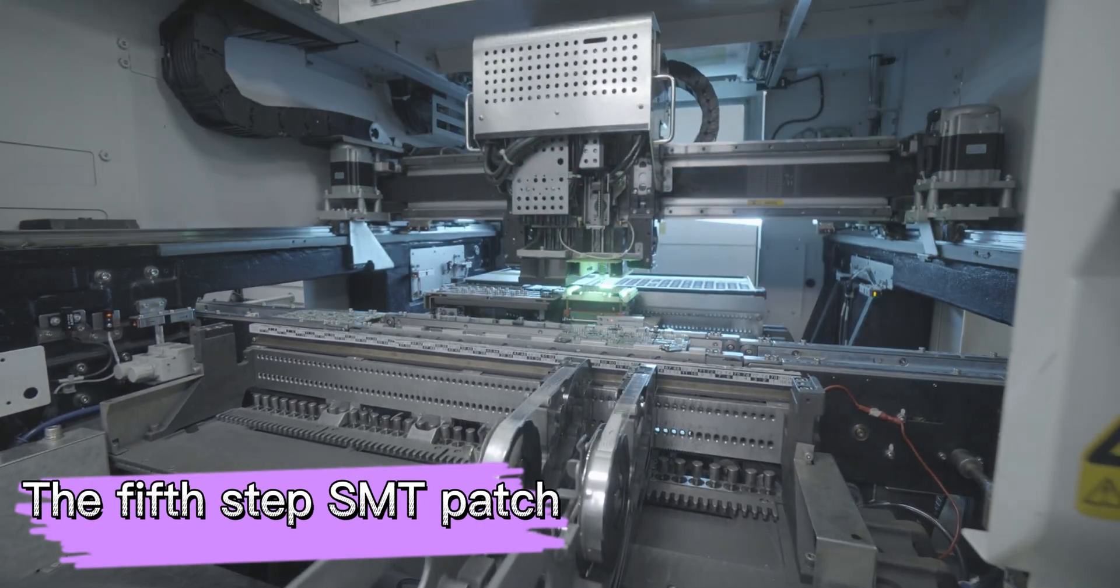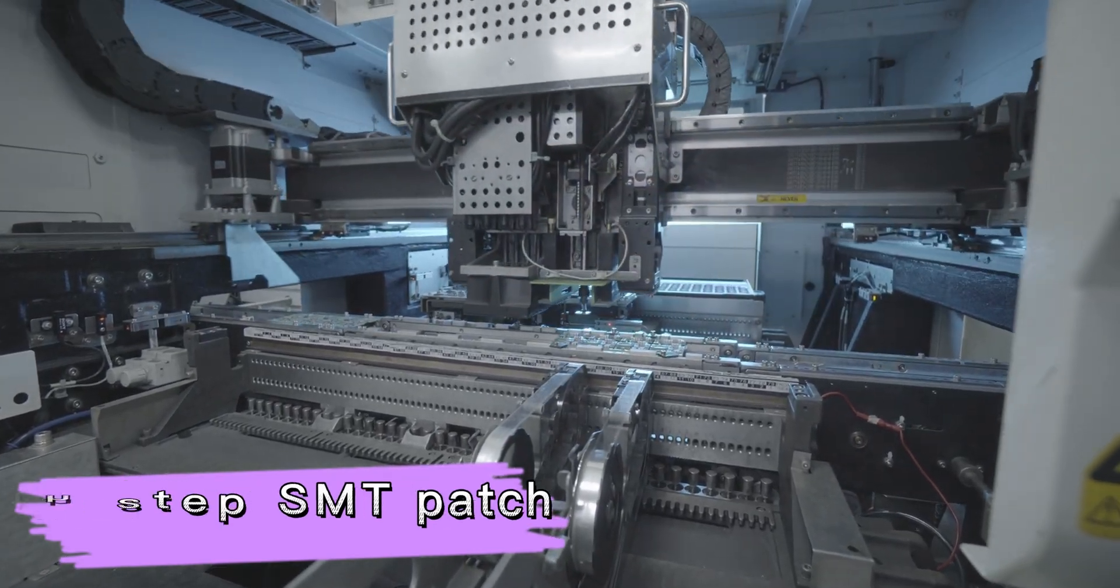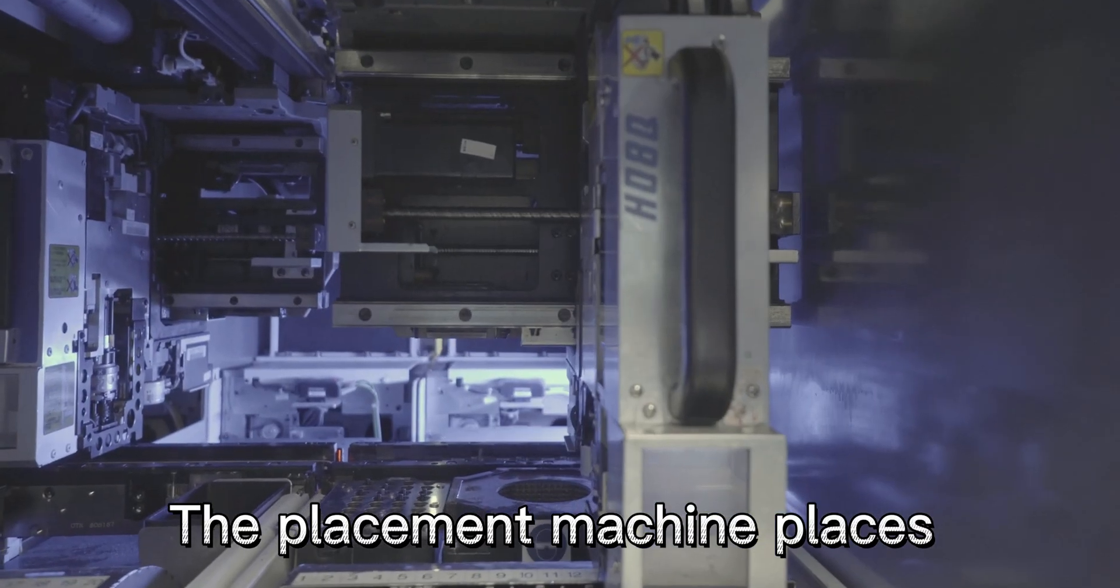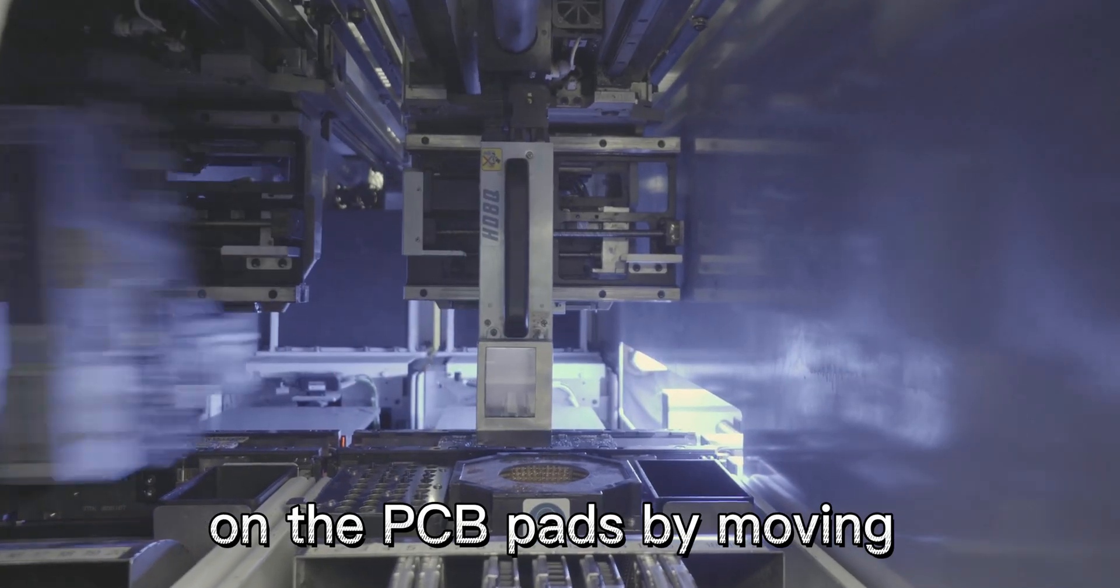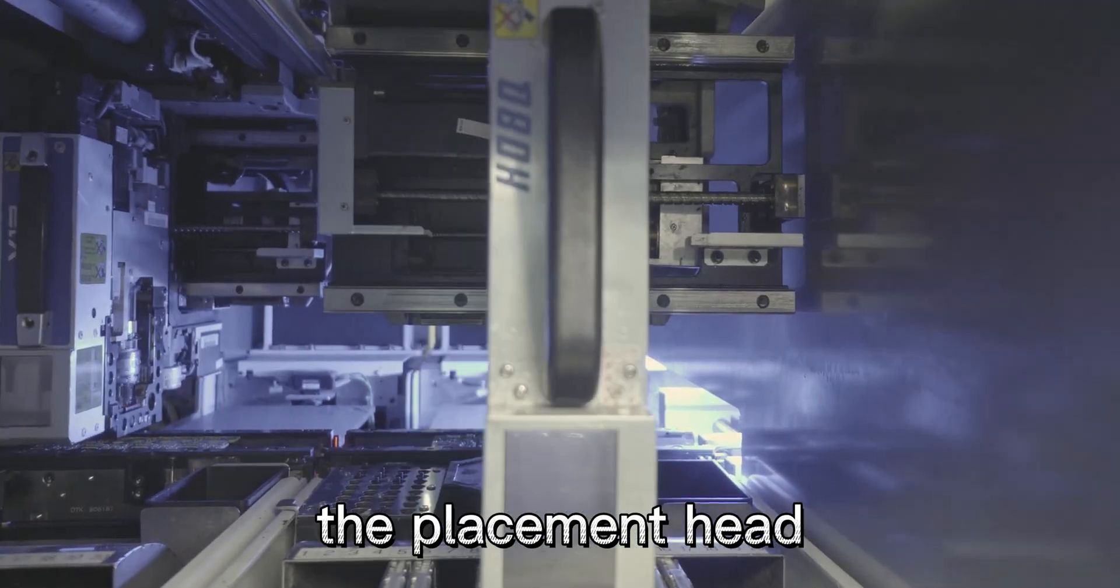The fifth step is SMT patch. The placement machine places the surface mount components on the PCB pads by moving the placement head.